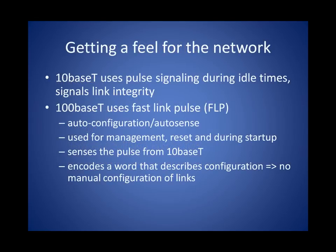That little green light that comes on when you plug into the network is a direct result of the signaling going on between the network interface card and the port you've connected to. 10BASE-T uses a 16-millisecond pulse to indicate it is alive and well — that's where the link light comes from. As we introduce faster network speeds, we need to negotiate speed and whether we're doing full or half duplex. Fast link pulse signaling does that — it's a codeword set in ones and zeros between network nodes, allowing them to negotiate speed and capabilities.